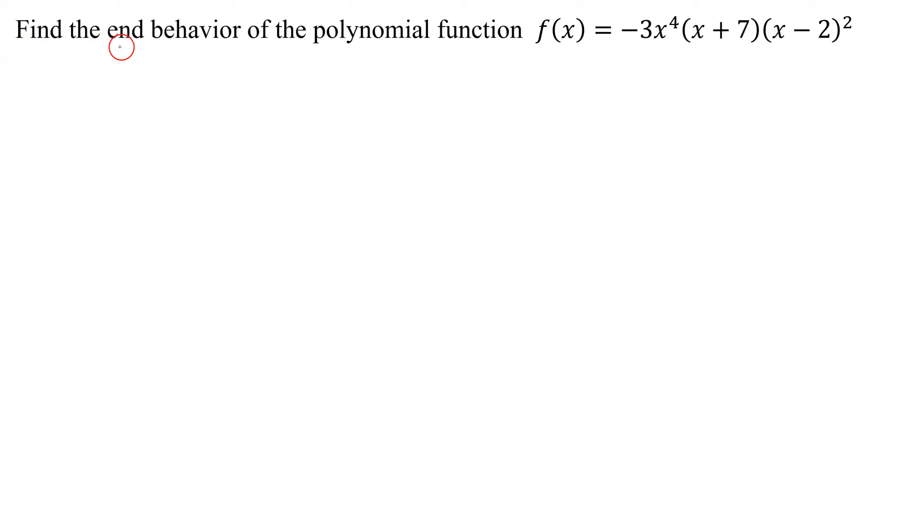In this example, we need to find the end behavior of the polynomial function f(x) = -3x^4(x+7)(x-2)^2.